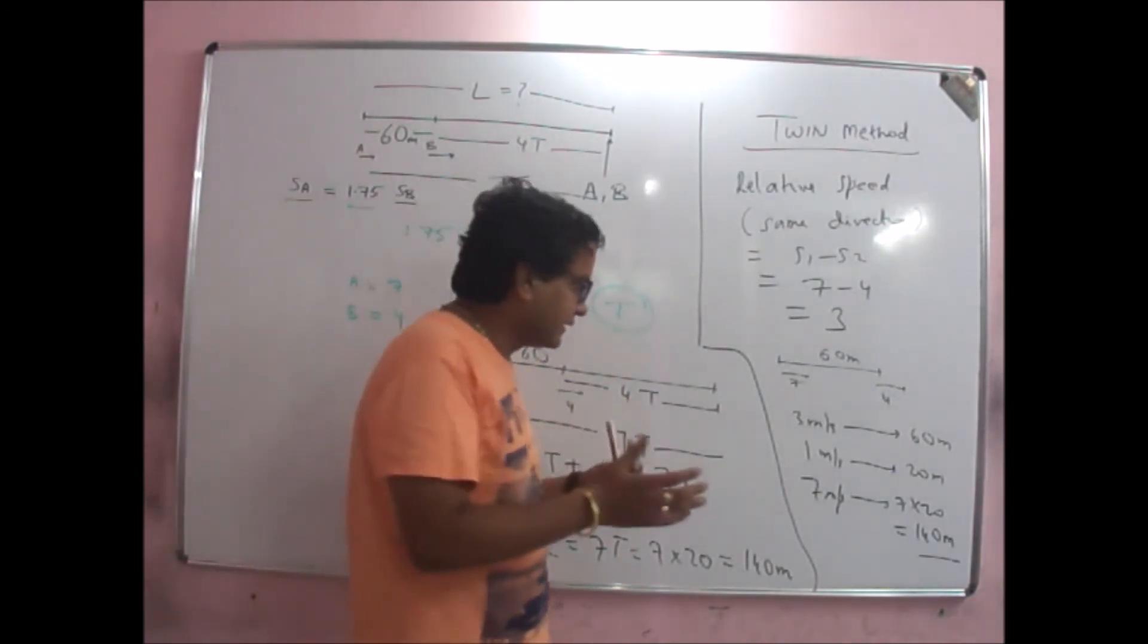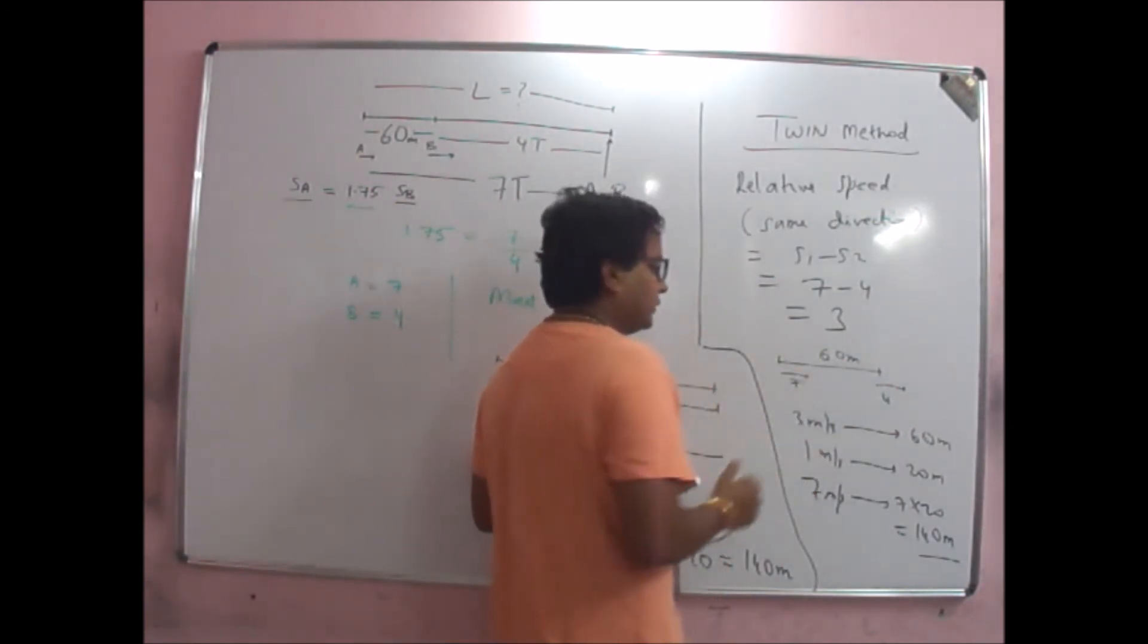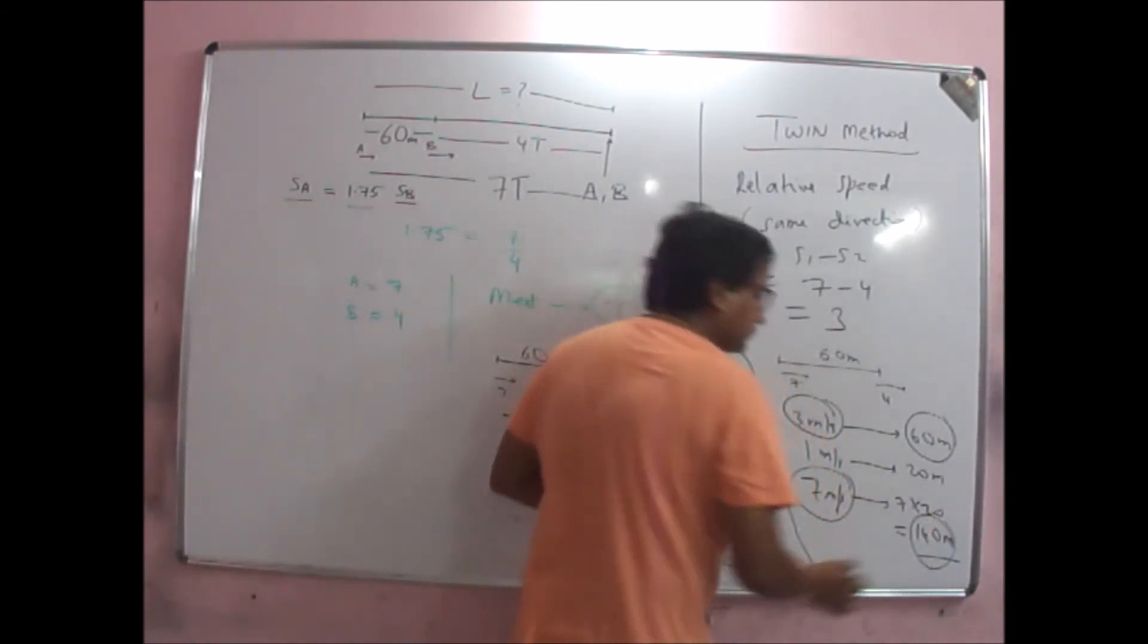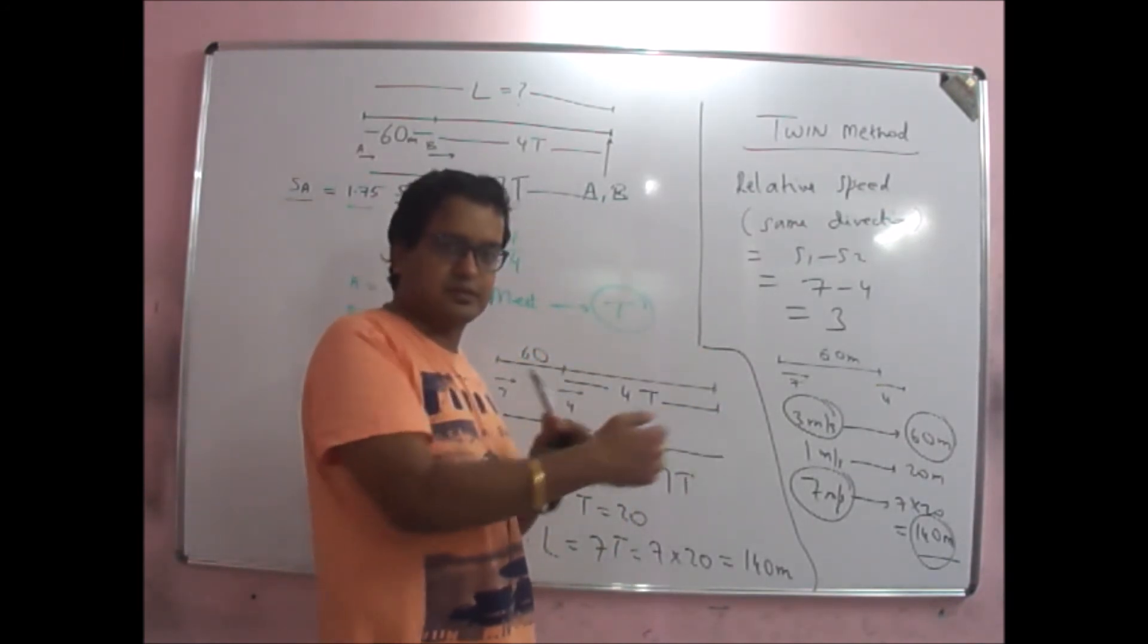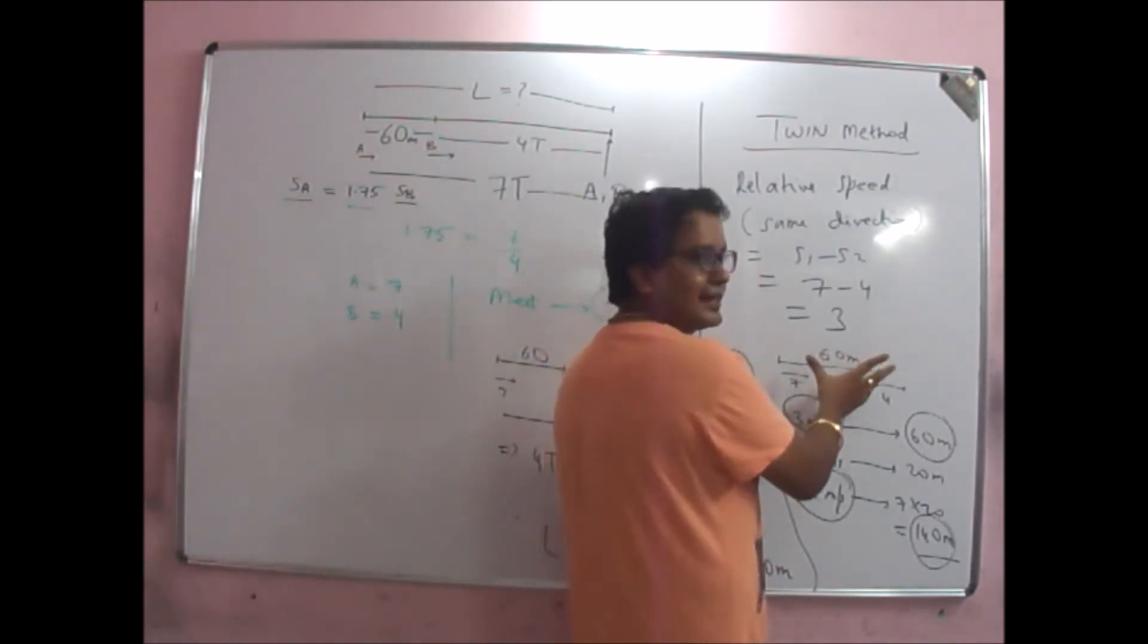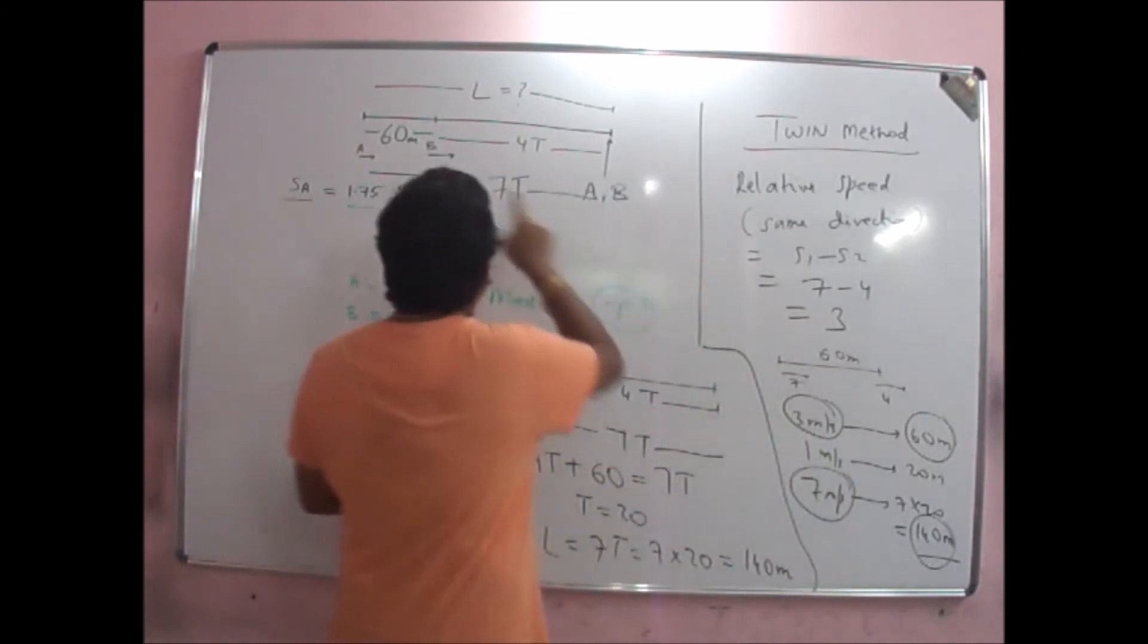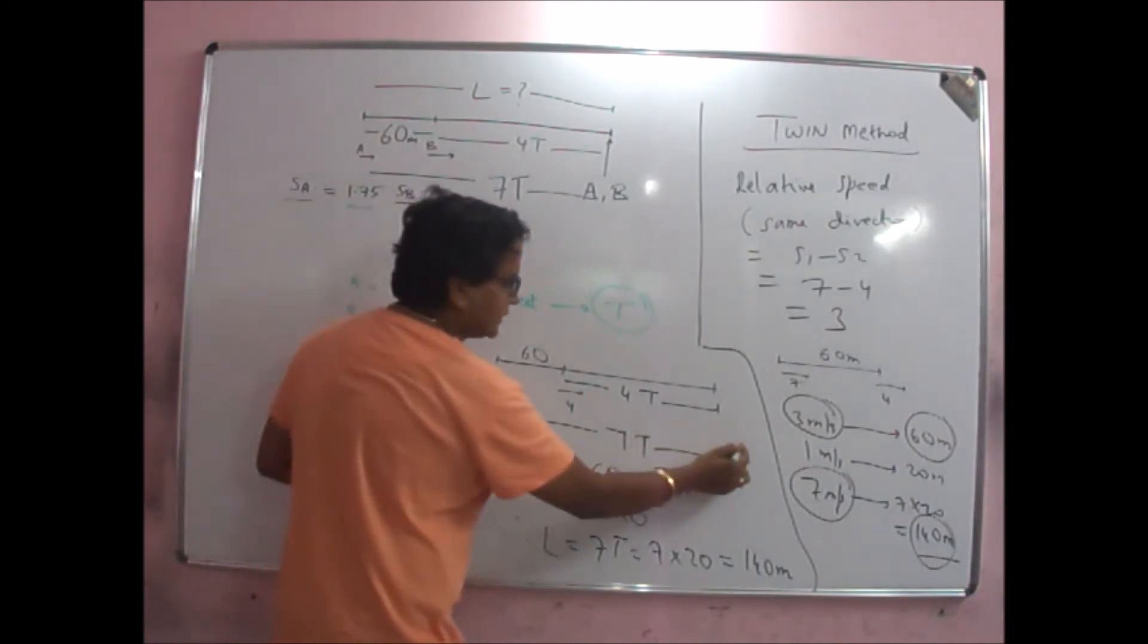Another way of understanding this same thing is, with 3 difference, if you have a 60 gap, 3 to 60 means 1 to 20, so 7 to 20 times 7 equals 140. So 7 times 20 is the total distance.